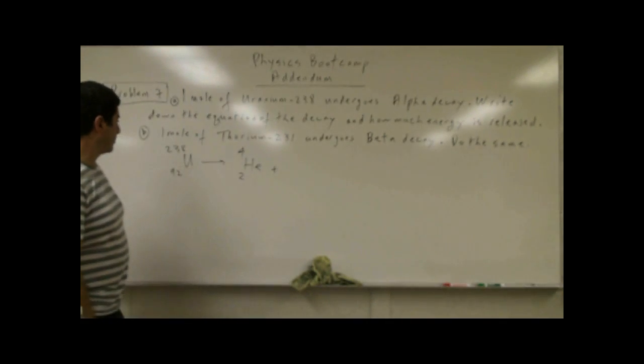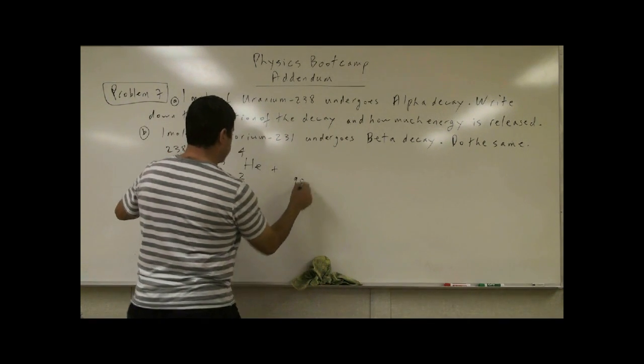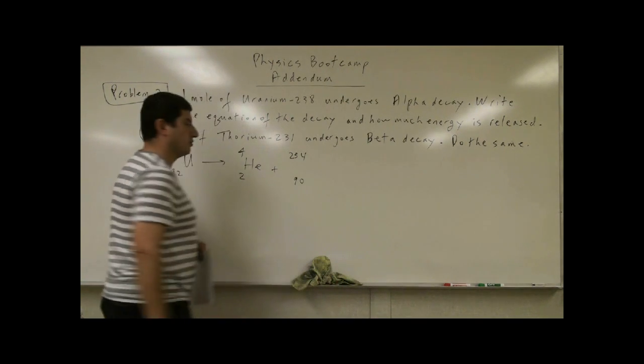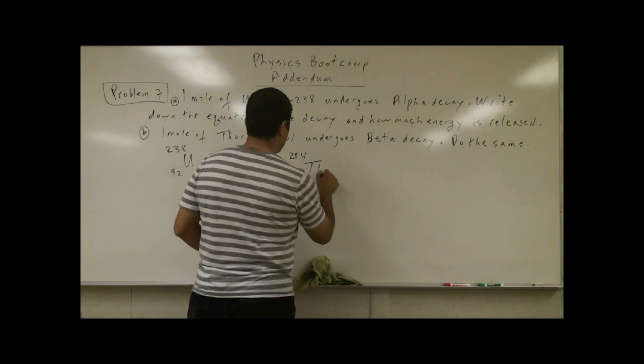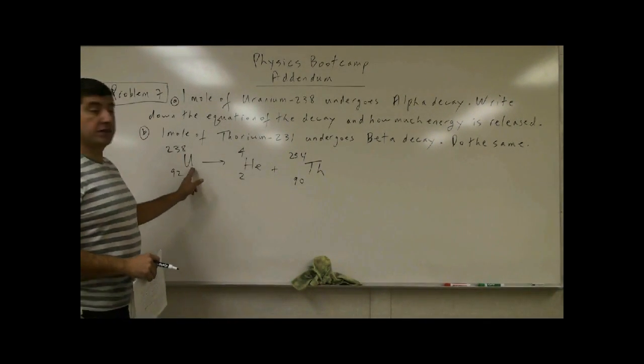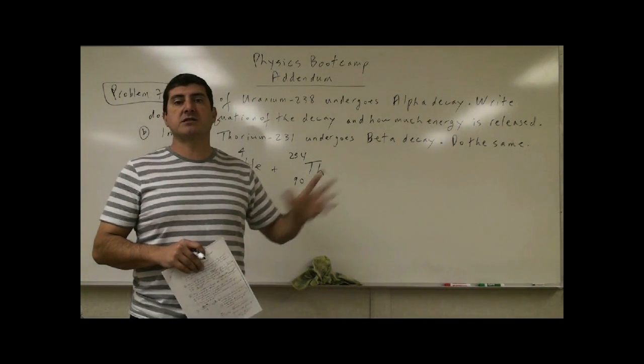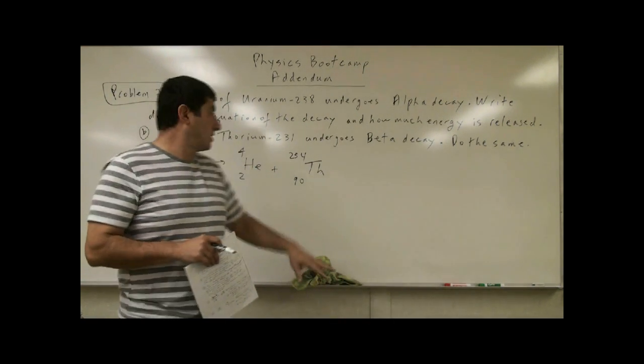What should we write here? Well, whatever is there has to have atomic number 90, and then atomic mass has to be 234. What is that element? That element turns out to be thorium, thorium-90-234. Uranium-238, by the way, is by far the most abundant isotope of uranium. About 99% of uranium comes in that form.